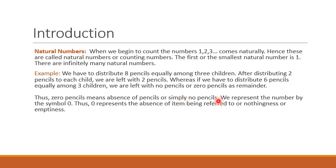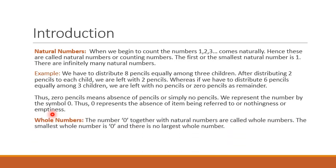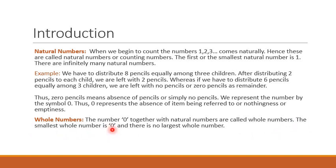Zero pencil means absence of pencil, or simply no pencils. To represent this absence of an object we use the symbol zero, and thus it can be used to represent nothingness or emptiness. In this way we have introduced one more number to our set of natural numbers, and we get a new set of numbers known as whole numbers. The number zero along with the natural numbers are called whole numbers. The smallest whole number is zero, and since there is no limit to natural numbers, there is also no limit to whole numbers — there is no largest whole number.